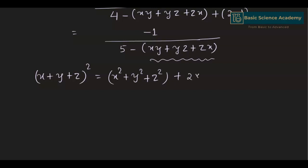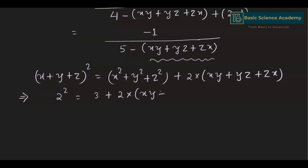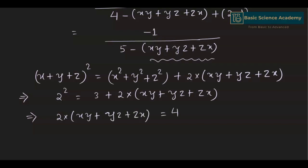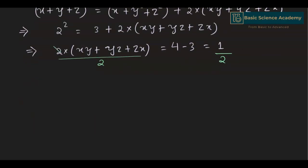We can find xy plus yz plus zx from the formula (x plus y plus z)² equals x² plus y² plus z² plus 2(xy plus yz plus zx). Substituting: 2² equals 3 plus 2(xy plus yz plus zx), giving 4 minus 3 equals 1, so 2(xy plus yz plus zx) equals 1. Dividing both sides by 2 gives xy plus yz plus zx equals 1/2.